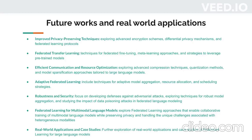Robustness and security: ensuring the robustness and security of federated learning systems is crucial. Future research can focus on developing defenses against adversarial attacks, exploring techniques for robust model aggregation, and studying the impact of data poisoning attacks in federated language models. Additionally, investigating methods to detect and mitigate model fairness issues in federated settings is another promising area of research.